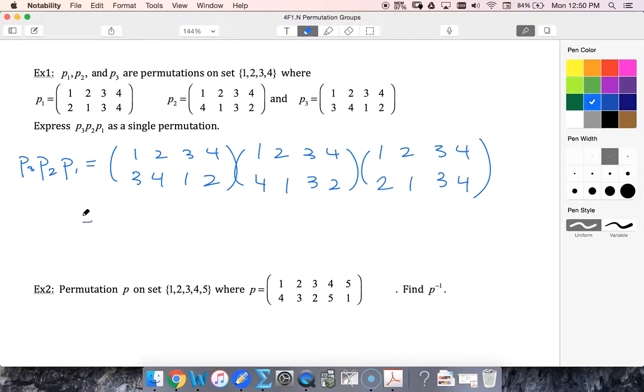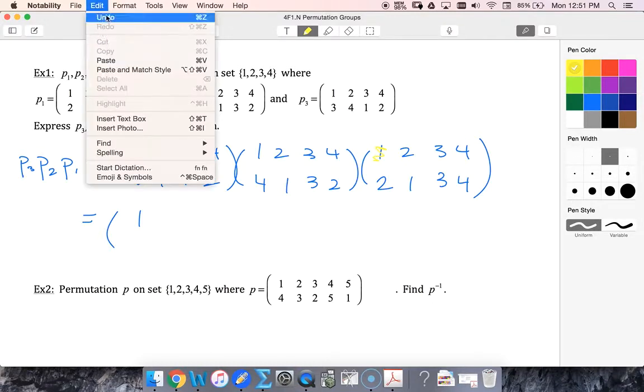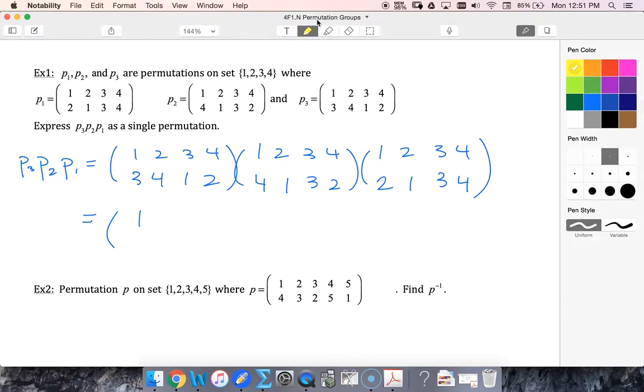Okay, so I'm going to combine my permutations. I'm going to start on the outside with one. Put in one, get out two, look for two, get out one, look for one, and get a final output of three.